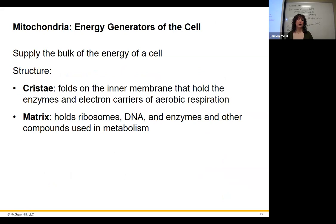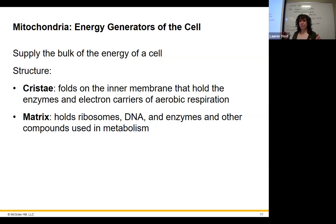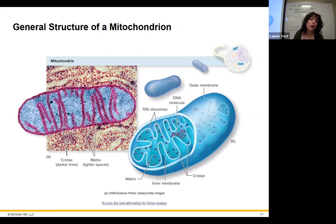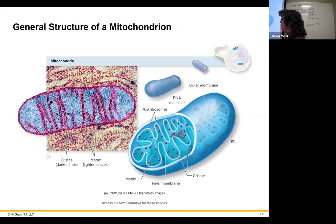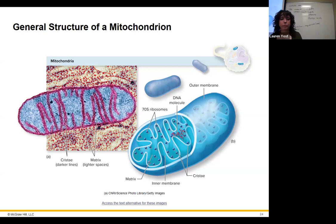Mitochondria — site of energy production, making ATP. It looks like a bean with folds inside called cristae, and the inside is called the matrix. They have their own ribosomes — bacterial-type ribosomes — and their own circular DNA. They are double-membraned. The folds maximize surface area just like the brain's folds, to give as much surface area as possible. What's going on there is aerobic respiration — using oxygen and producing carbon dioxide to make ATP for the cell.